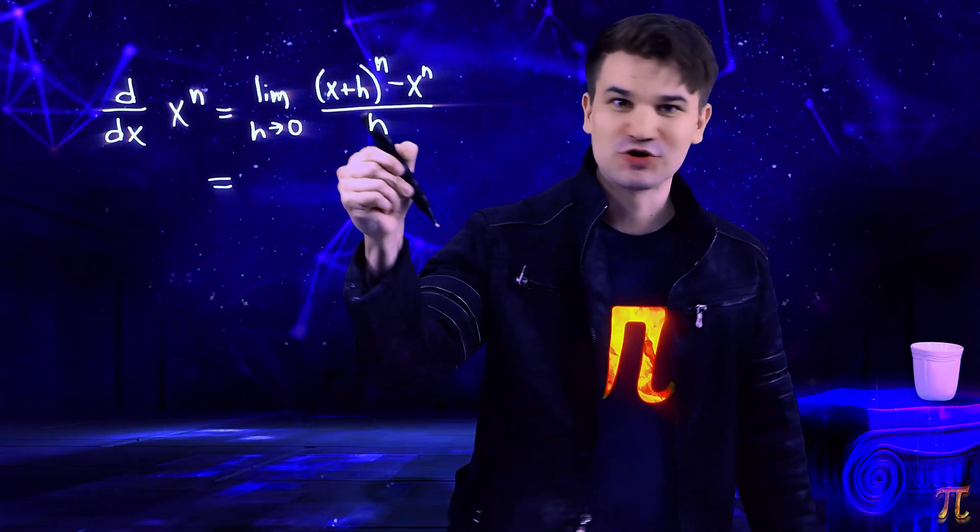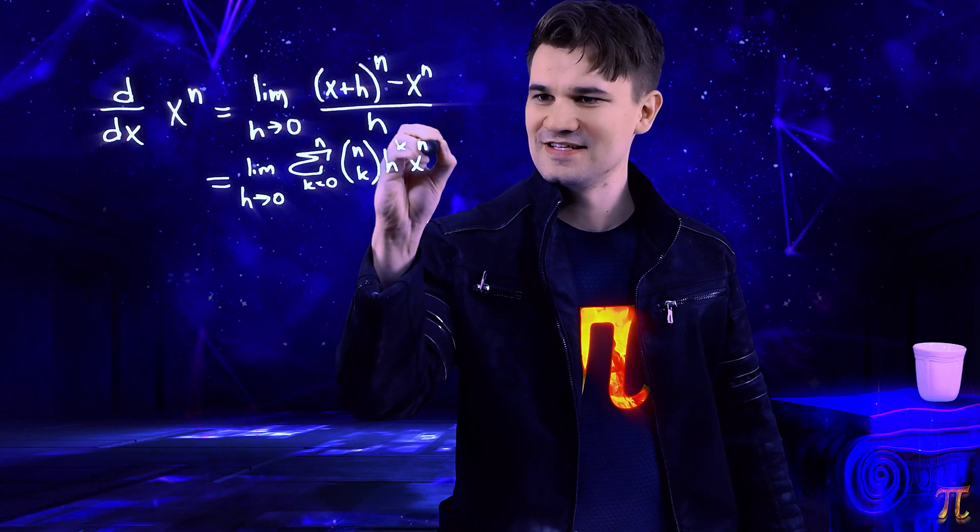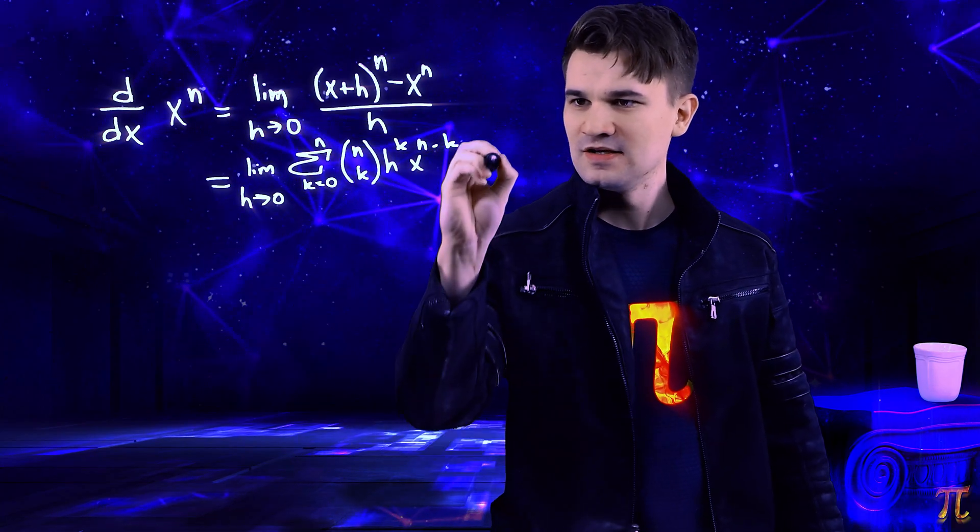Now luckily we just covered the binomial formula, so we have an expression for (x+h) to the power of n. It's the sum from k equals 0 to n of n choose k times h to the k times x to the n minus k. That's all (x+h) to the n.